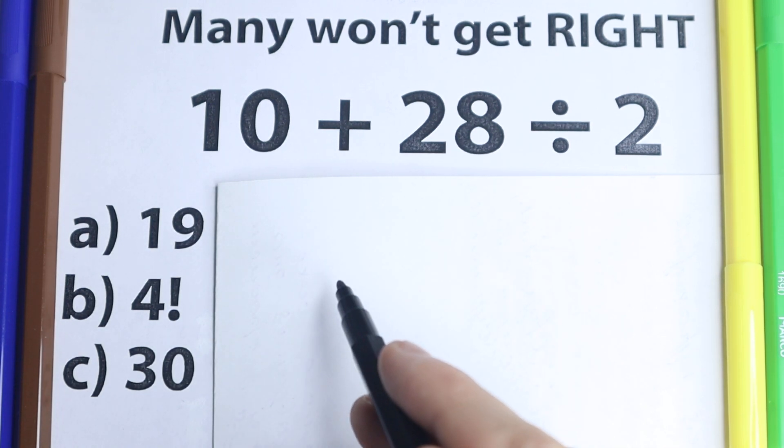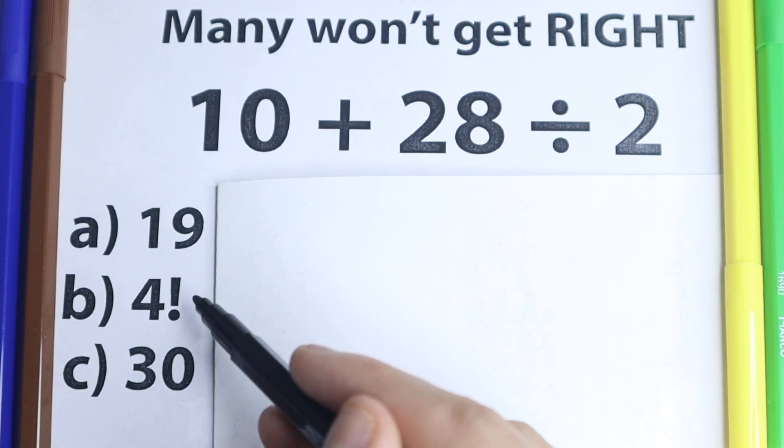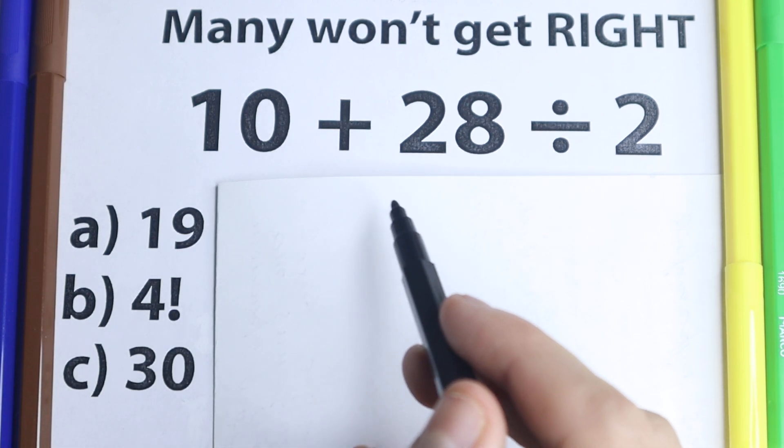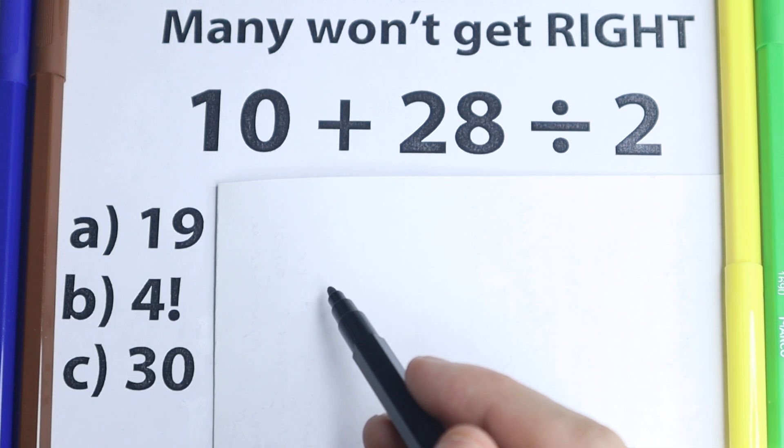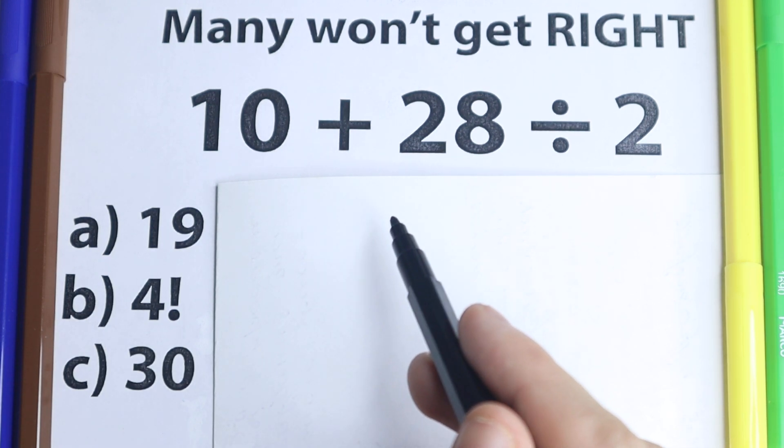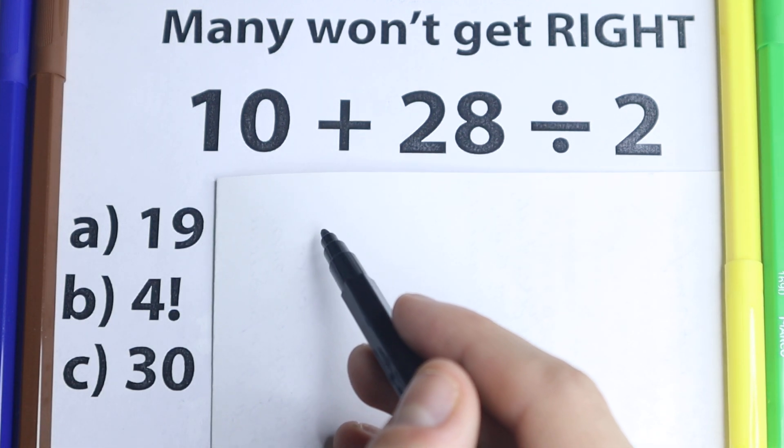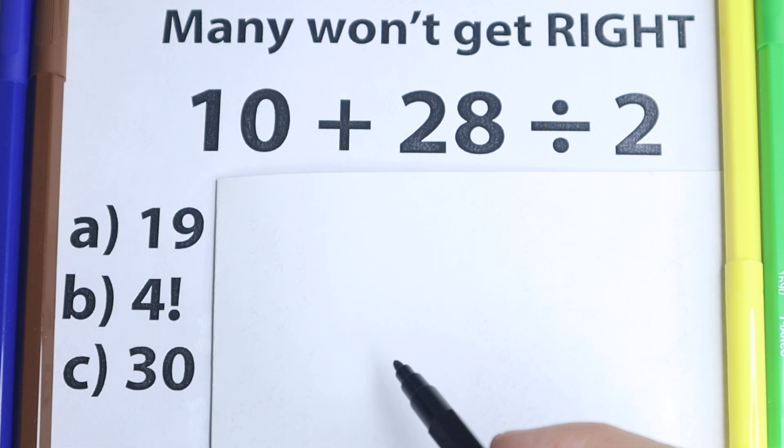I suggest you go ahead and write your answer into a comment section, we have option A, B and C. So really interesting options and we can easily test your algebra skill and your math skill right here. Obviously whatever order we select is going to create a different answer, so we need to understand what is the correct order to do this problem.